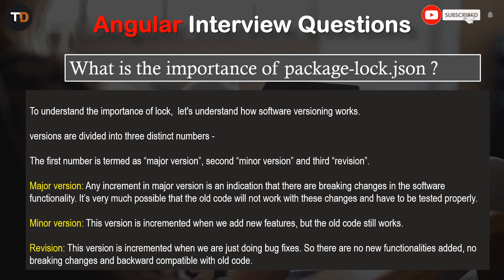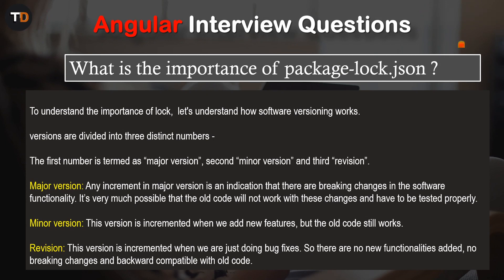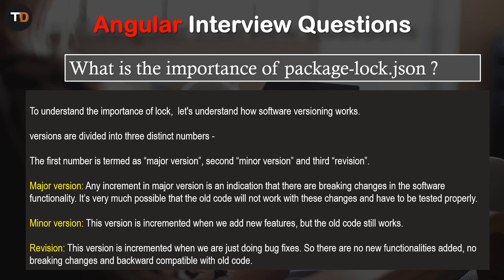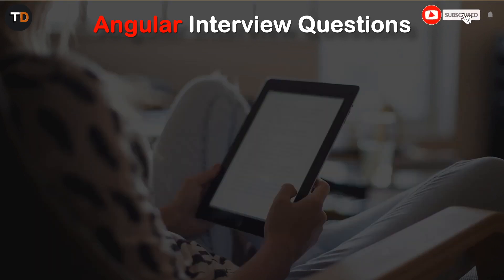It's very possible that old code will not work with major version changes and will need to be tested properly. The minor version is incremented when we add a new feature but the old code still works. The revision version is incremented when we are just doing bug fixes — no new functionalities, no breaking changes, and backward compatibility with old code.